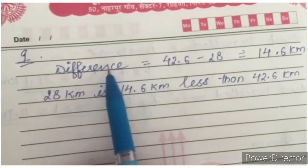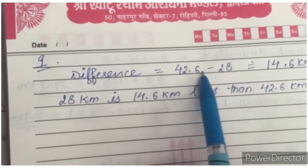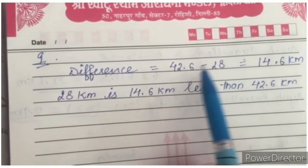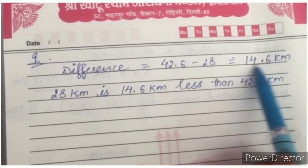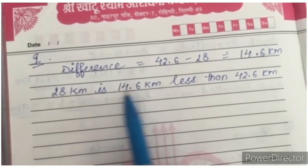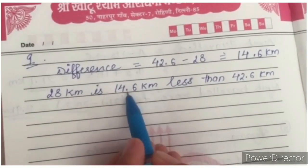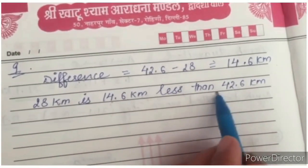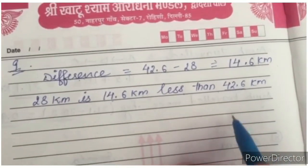So what we have to do in this question? Difference. That is 42.6 minus 28. If you will subtract, what will you get? That is 14.6 km. Then you will write, 28 km is 14.6 km less than 42.6 km.